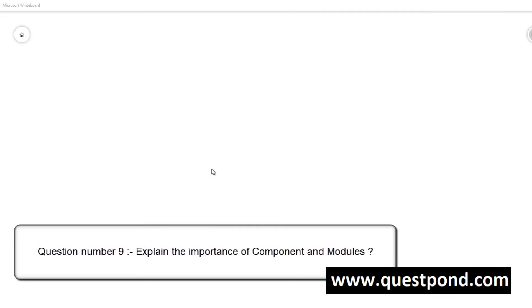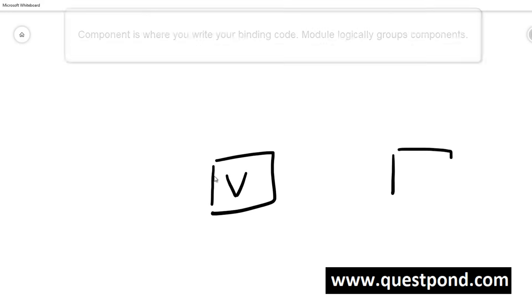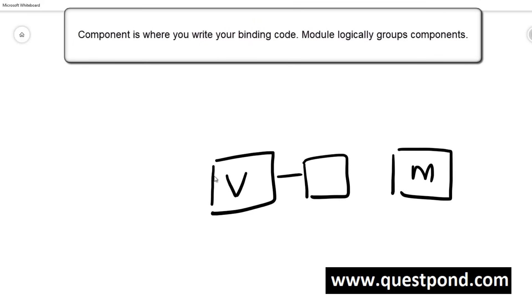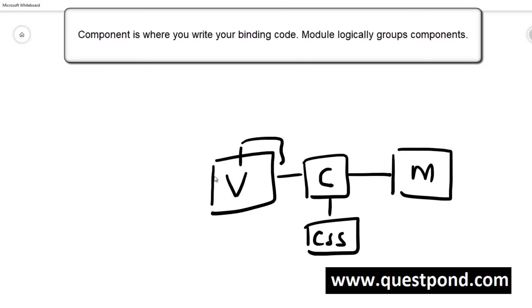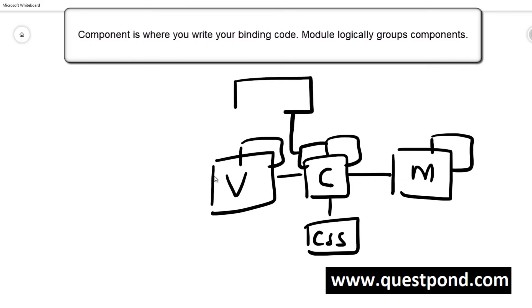What exactly is a component and module in Angular? Angular is a binding framework that helps bind the view and model easily. The binding code that binds the view and model is termed a component — it is like a mediator or central point that binds the view, model, and CSS. In a large enterprise application you can have many views and components; you can group components into something called a module. A module groups Angular components, while a component handles the binding between view and model.